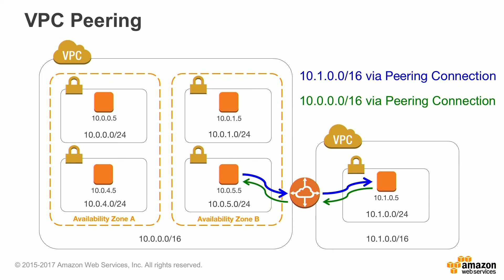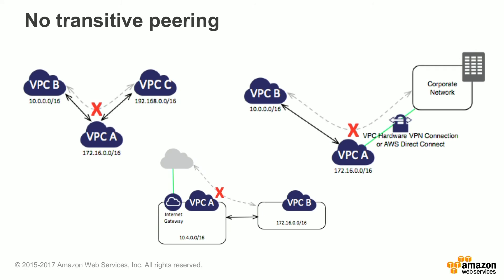A common use case for VPC peering in higher education is the use of a shared services or central services VPC. In this example, the VPC on the right would host commonly used services such as Active Directory, logging, and monitoring tools. Individual VPCs from the central IT or other department accounts would then peer to this AWS VPC, allowing the usage of services to stay within AWS without having to traverse the internet or Internet 2 to get back to campus.